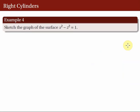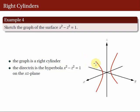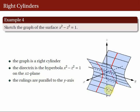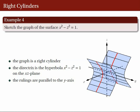Another example: sketch the graph of the surface x² - z² = 1. There is a missing variable — y — so the graph of this equation is a right cylinder. We begin by sketching the graph of x² - z² = 1 on the xz-plane, and we obtain a hyperbola. Here's the hyperbola on the xz-plane. Then we translate this red curve along the axis of the missing variable, which is y. Then we draw the rulings parallel to the y-axis. So here's a picture of the right cylinder. That's the end of the second part, and the next part will be on surfaces of revolution.